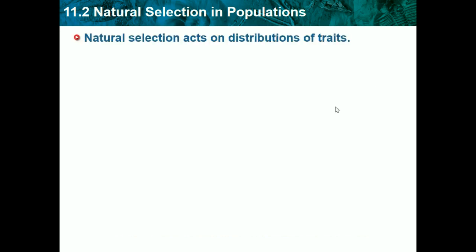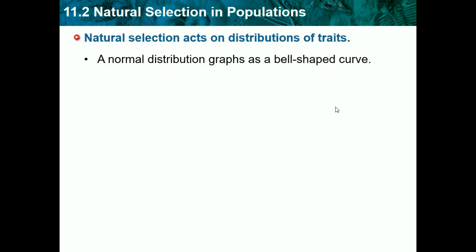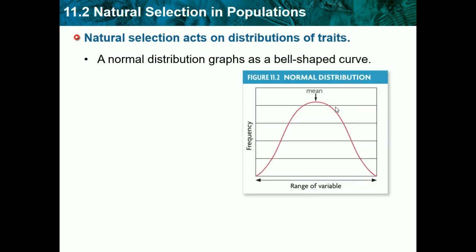Natural selection acts on distributions of traits. A normal distribution graph is a bell curve where most individuals are average, at the mean — that's why the peak is at the mean. As you diverge from the mean, there are fewer individuals.